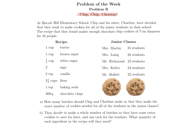I'm just going to read through the problem for you. At Biscuit Hill Elementary School, Chip and his sister Charlene have decided that they will make cookies for all of the junior students in their school. The recipe that they found makes enough chocolate chip cookies of a 7cm diameter for 16 people. I'm going to underline some key information — they want to make cookies for all of the junior students in their school, and this is one of the really key pieces of information.